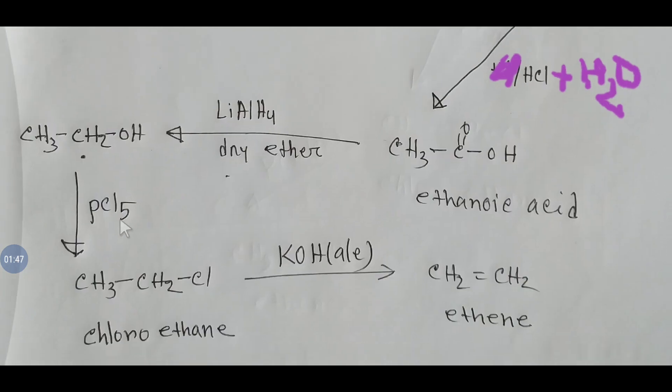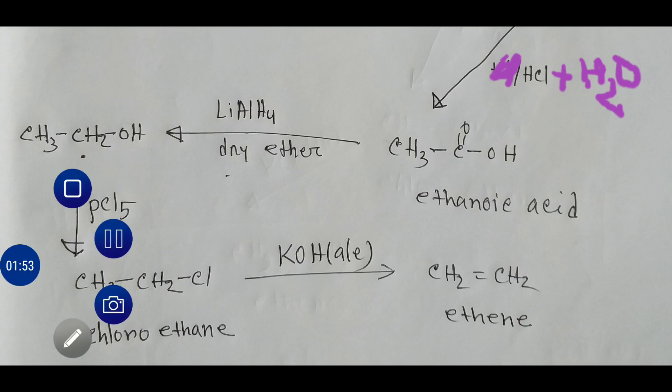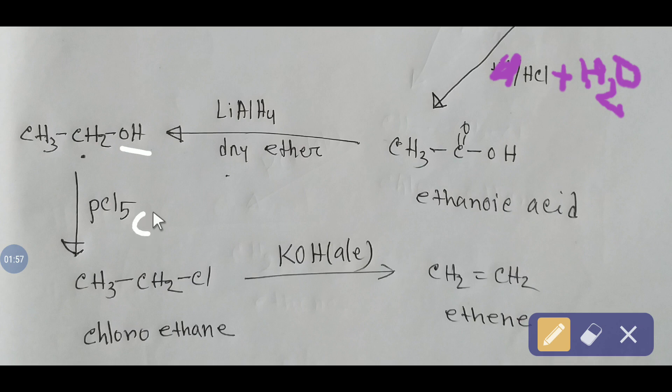If you add phosphorus pentachloride, the OH group will be replaced by chlorine that comes from PCl5, and you will get chloroethane.